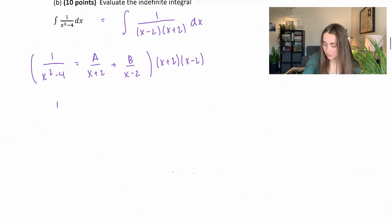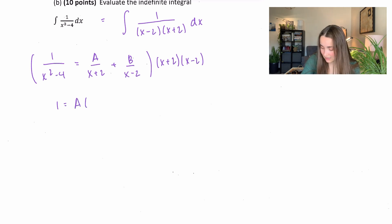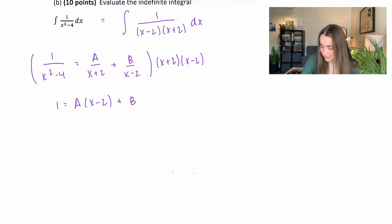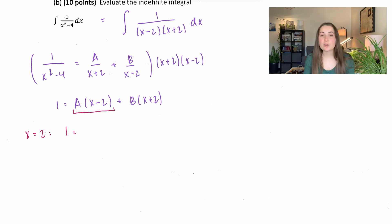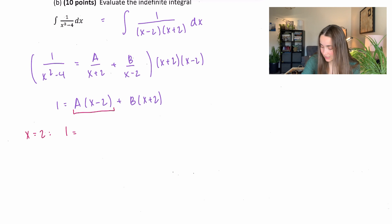On the left side everything cancels and we're left with 1 equals A(x-2), because (x+2) cancels, plus B(x+2). Plugging in x=2: the A term goes to 0, so 1 equals B times (2+2), giving 1 = 4B, so B = ¼.